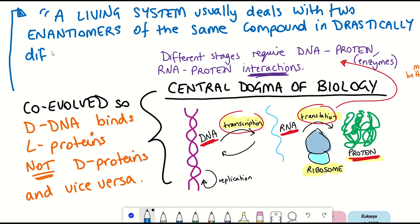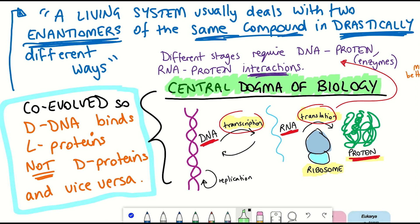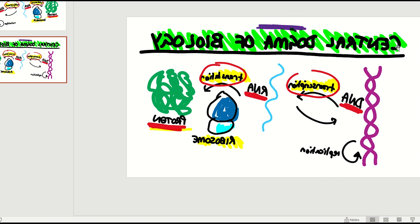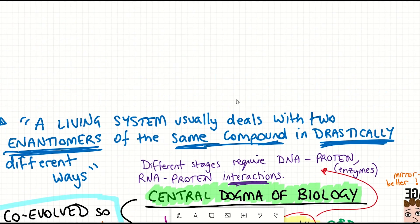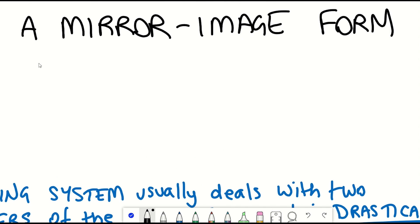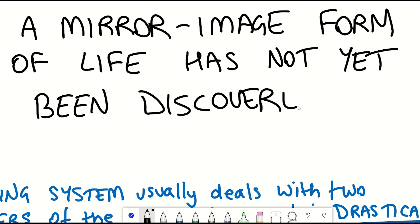And so the mirror world of biology is the hypothesis that if our world works, then the mirror versions of each of these components would also work and fulfill the central dogma. However, a mirror image form of life has not yet been discovered, but the individual components can be created.